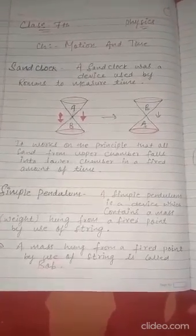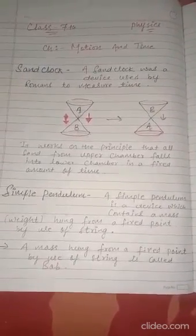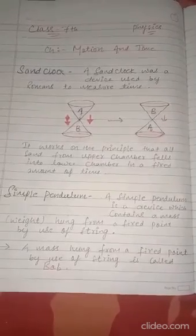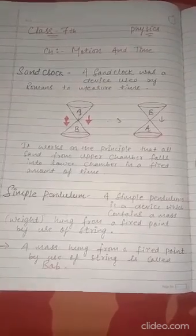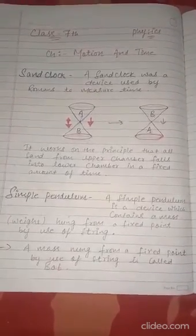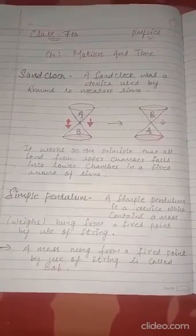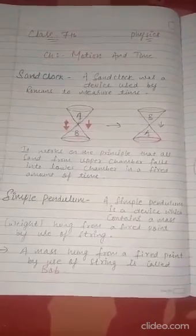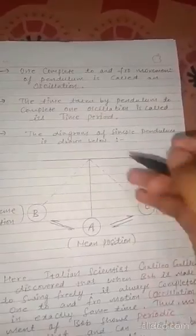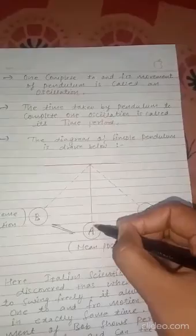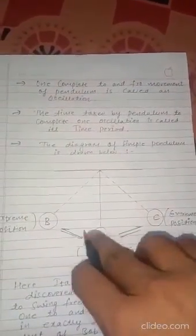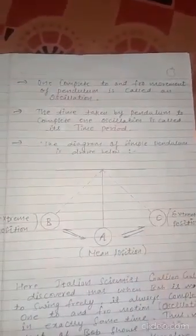Simple pendulum क्या है? It's a device which contains a mass — a weight hung from a fixed point by use of string. Fixed point से hung किया गया है। एक mass को by use of string। अब इसको हम लोग diagrammatically देखते हैं — यह fixed point हो गया, यह आपका string हुआ, और यह आपका mass हुआ। यह पूरा structure — fixed point, string, और mass — इसको simple pendulum बोलते हैं।